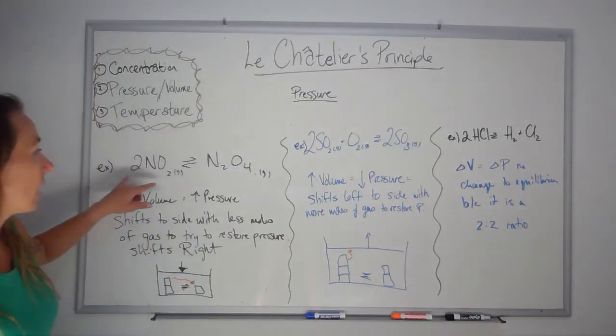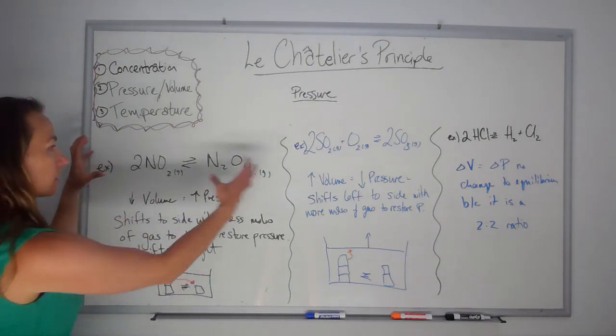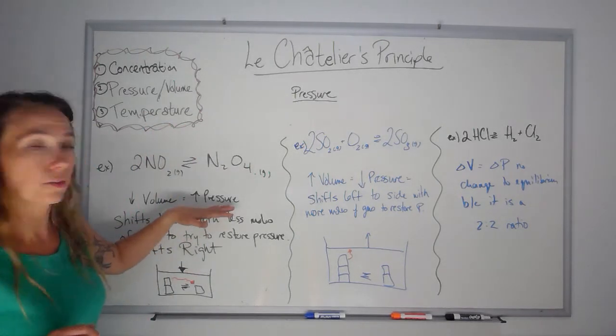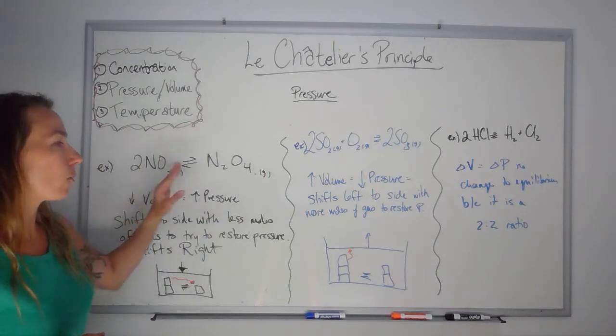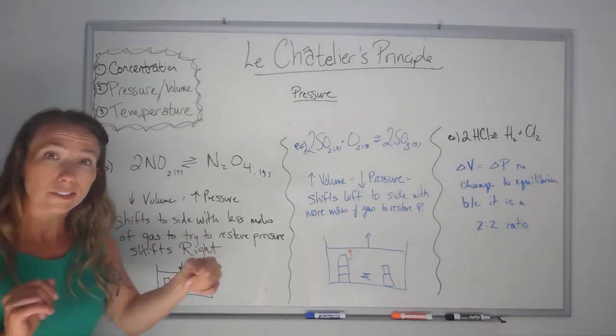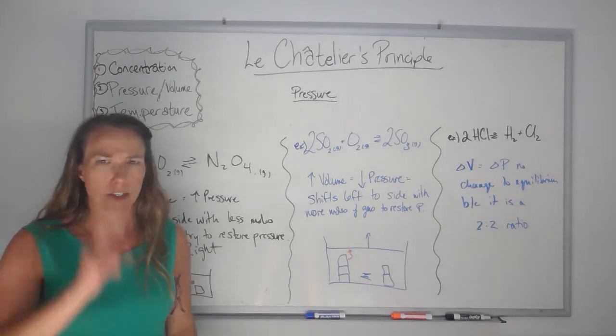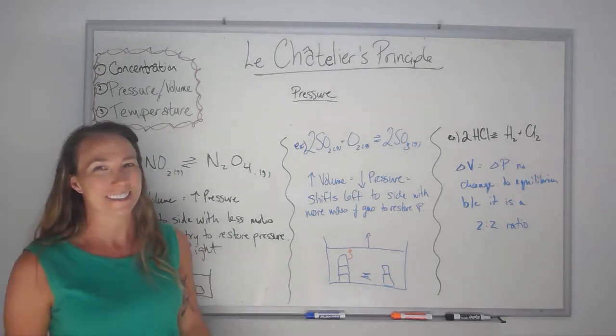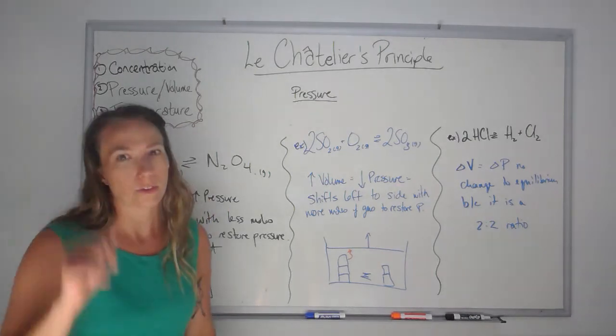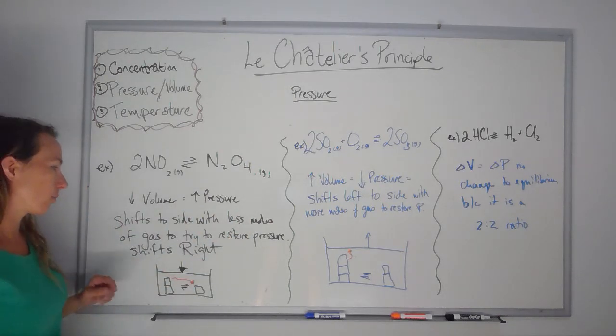Here's one example. If I take some of this in equilibrium with this and I play with the volume, I'm going to take this chamber that these two things are mixed in and I'm going to decrease the volume. Well if I squish that balloon it's going to increase the pressure. If I increase the pressure this equilibrium wants to shift to the side that makes the pressure lower because it doesn't like this pressure. It's going to shift to the side so it doesn't have to feel all this pressure anymore. So decreasing the volume, increasing the pressure, I'm going to shift to the side with the less moles of gas to restore the pressure. Therefore it shifts right.